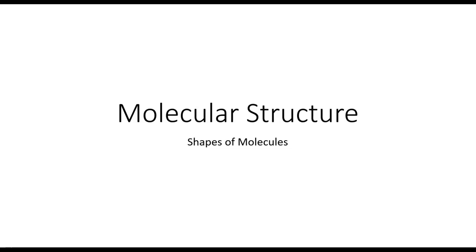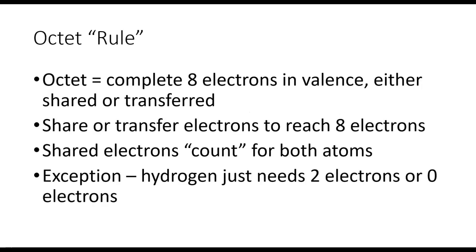Let's take a look at how molecular compounds are related to molecular structure or shape of molecules. First, we need to look at the octet rule. The octet rule states that we want to have a complete eight electrons in a valence. This is very similar to our ionic compounds where it wants to be like a noble gas.